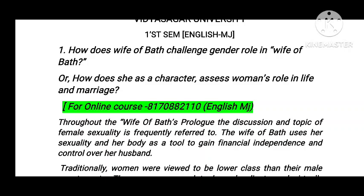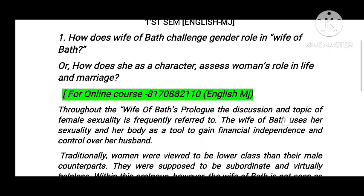So throughout the Wife of Bath's prologue, the topic of female sexuality is frequently referred to. The Wife of Bath uses her sexuality and her body as a tool to gain financial independence and control over her husbands.